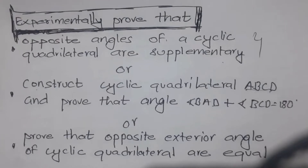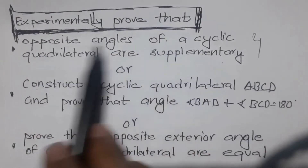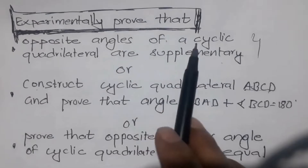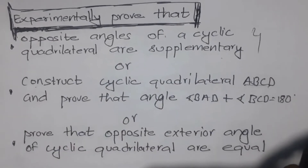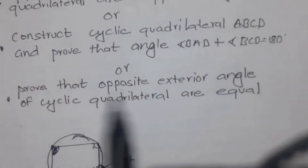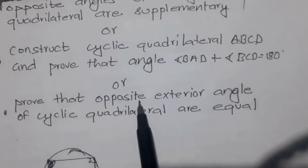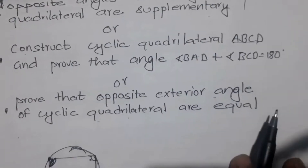I have not yet discussed this. How the opposite angles of a cyclic quadrilateral are equal. There is another question: prove that opposite exterior angles are equal to this angle of a cyclic quadrilateral.